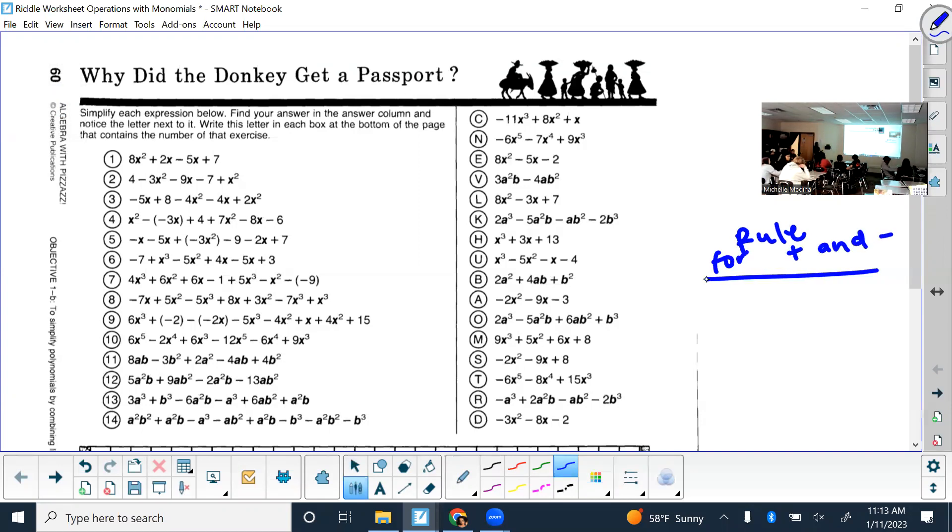The rule for adding and subtracting monomials is to combine like terms. So if there are no like terms, can I simplify it? All right, only if they're like terms.